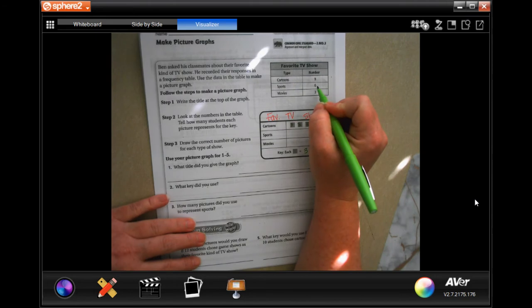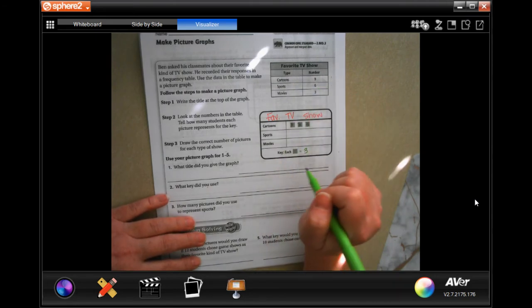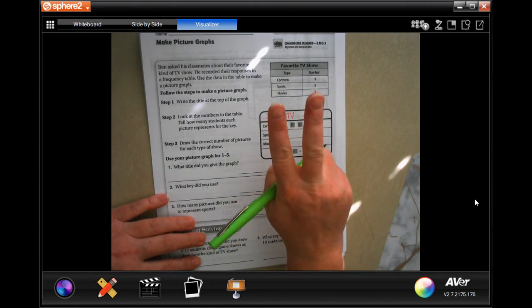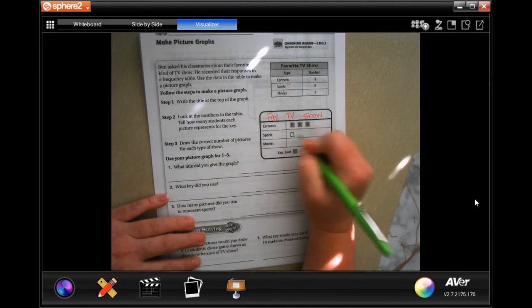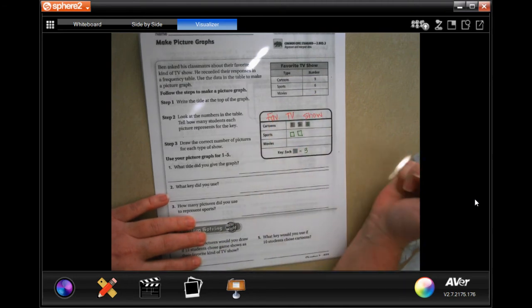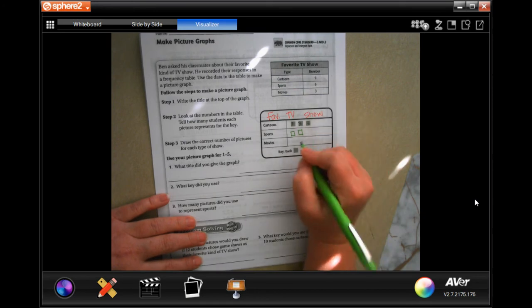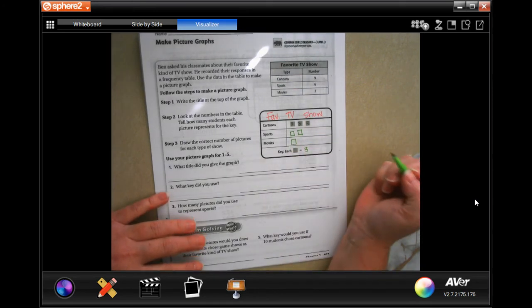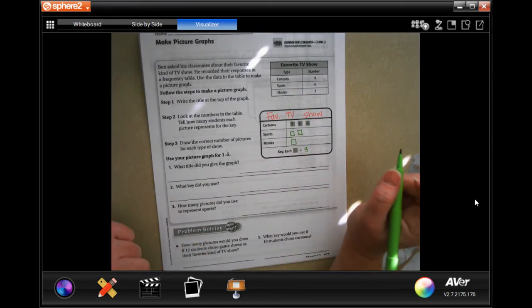So now, for sports, I have six. Well, three goes into six twice, so I'm going to have two boxes. And movies was only three, and three goes into three once, so I'm going to have one box.